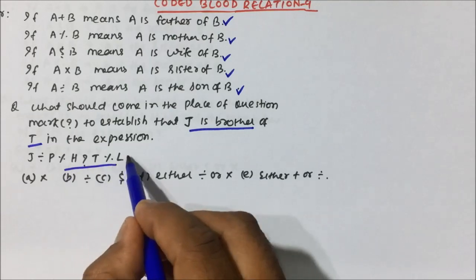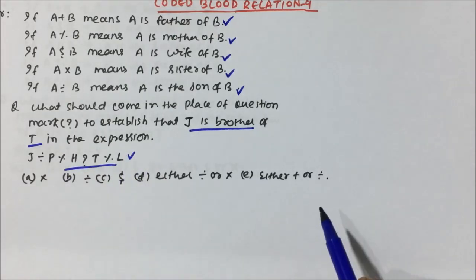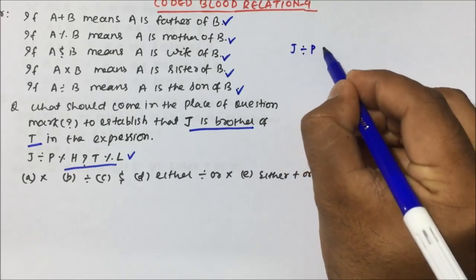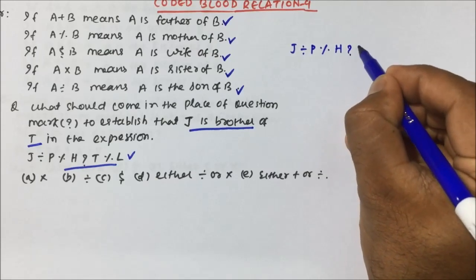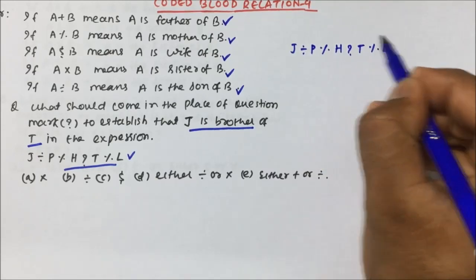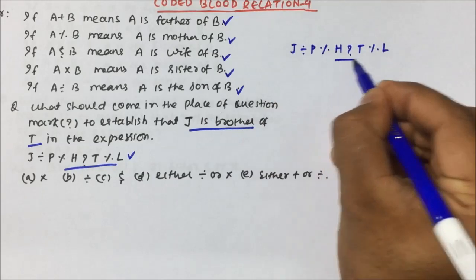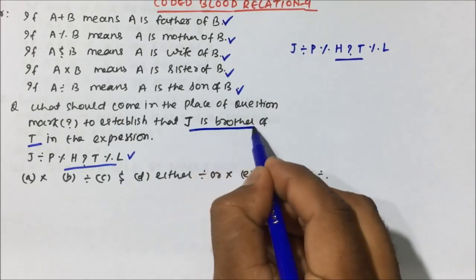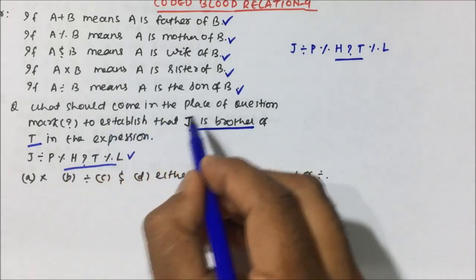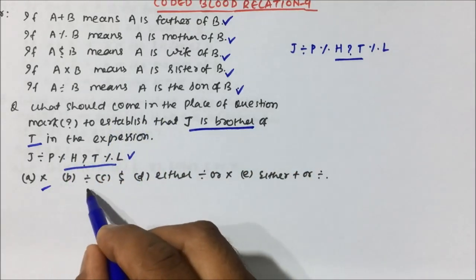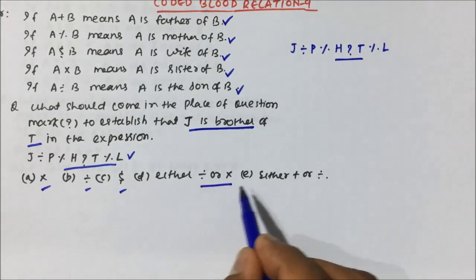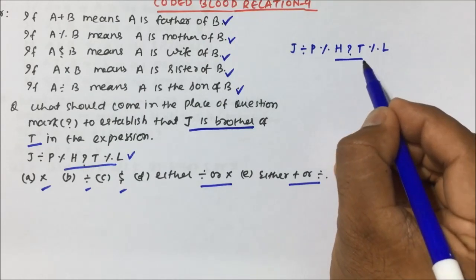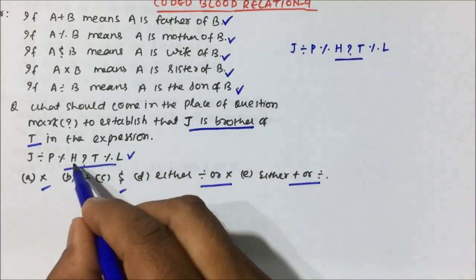So what should come in the place of the question mark to establish that J is brother of T? The expression given is: J divided by P percentage H question mark T cross L. You have to tell which option is true — whether it should be multiplication, division, dollar, or either of these — so that we get the relation J is brother of T.